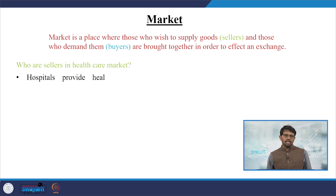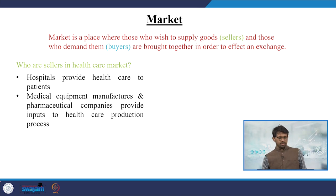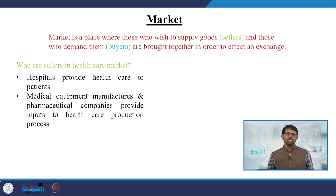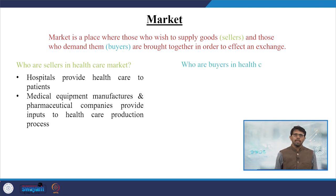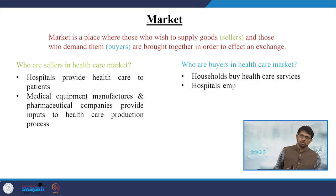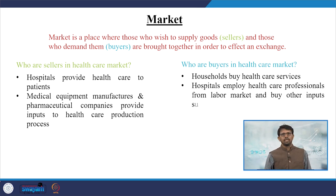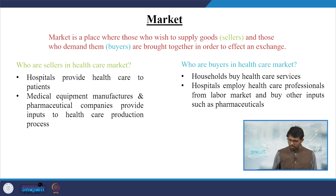Who are the sellers in the market? Usually they are hospitals who provide healthcare to patients, medical equipment manufacturers, or pharmaceutical companies that provide inputs to the healthcare production process. And who are the buyers? They are households or individuals who buy healthcare services. Hospitals also employ healthcare professionals from the labor market and buy inputs such as pharmaceuticals.